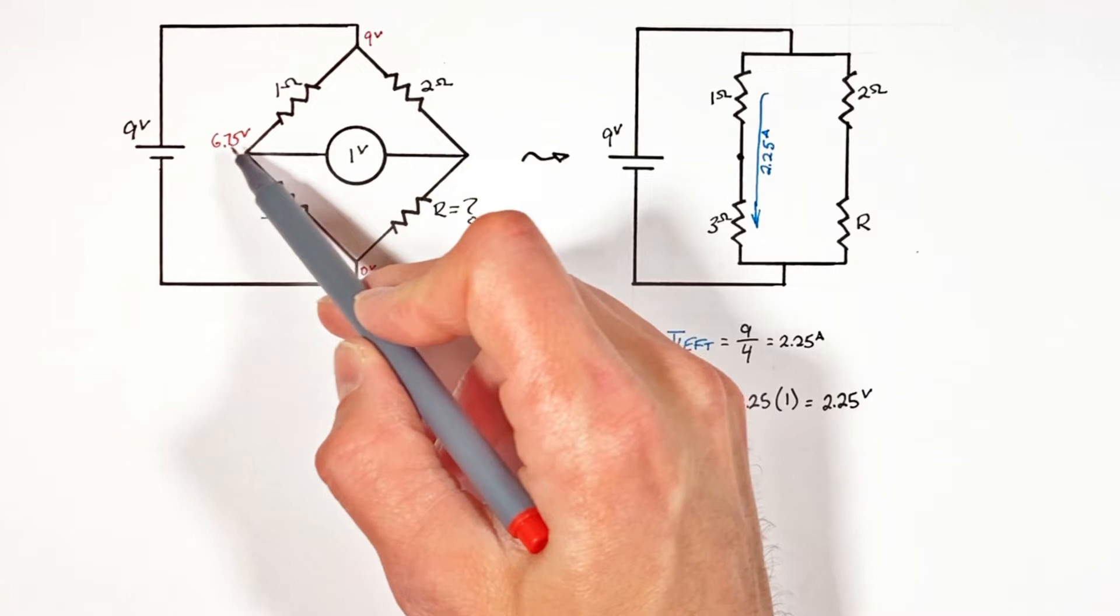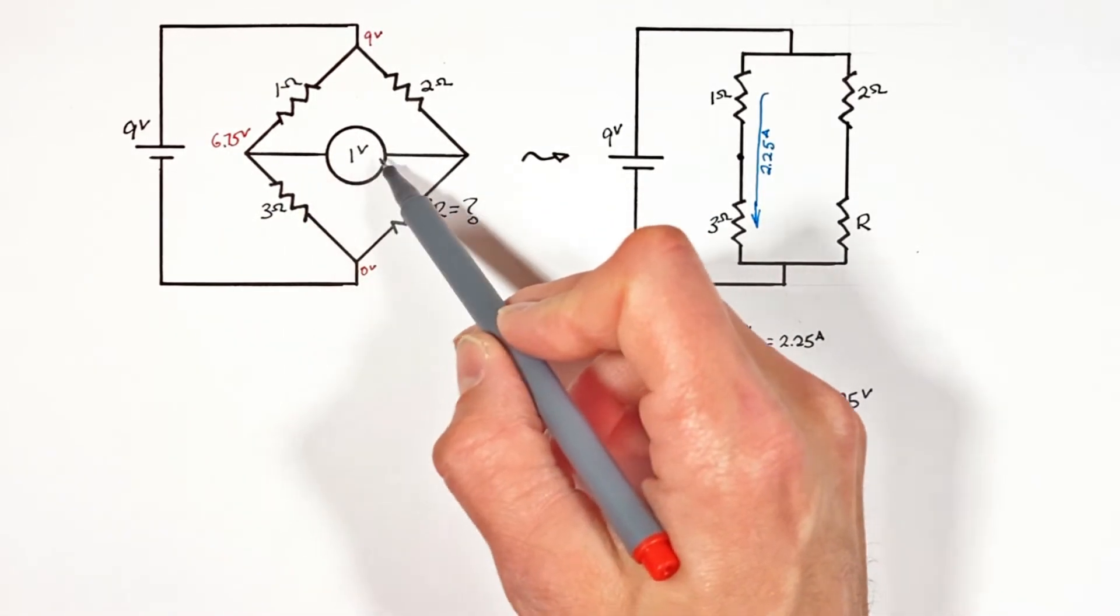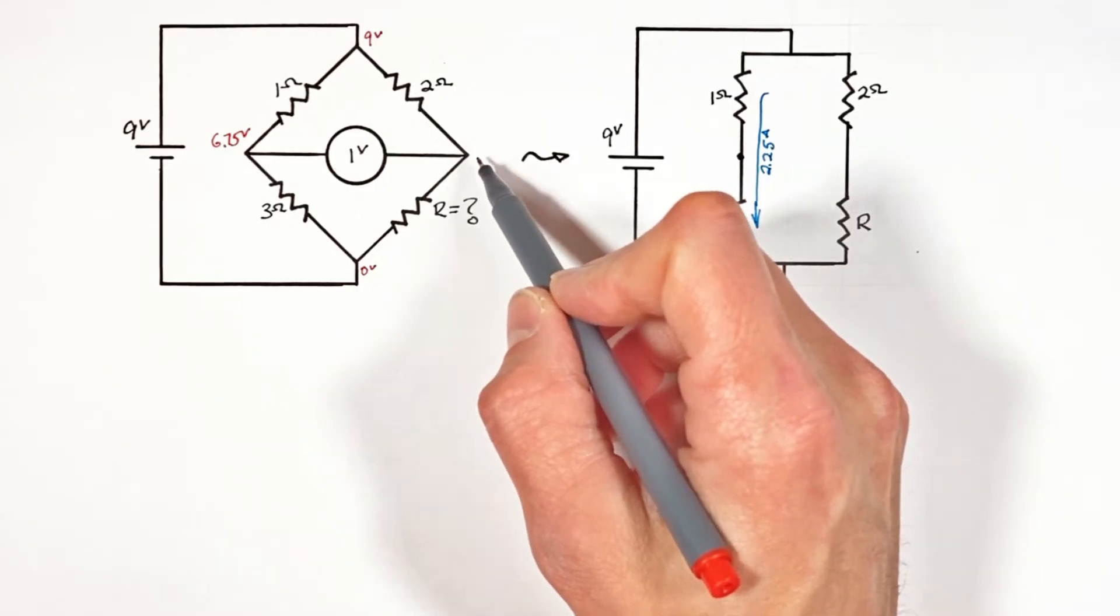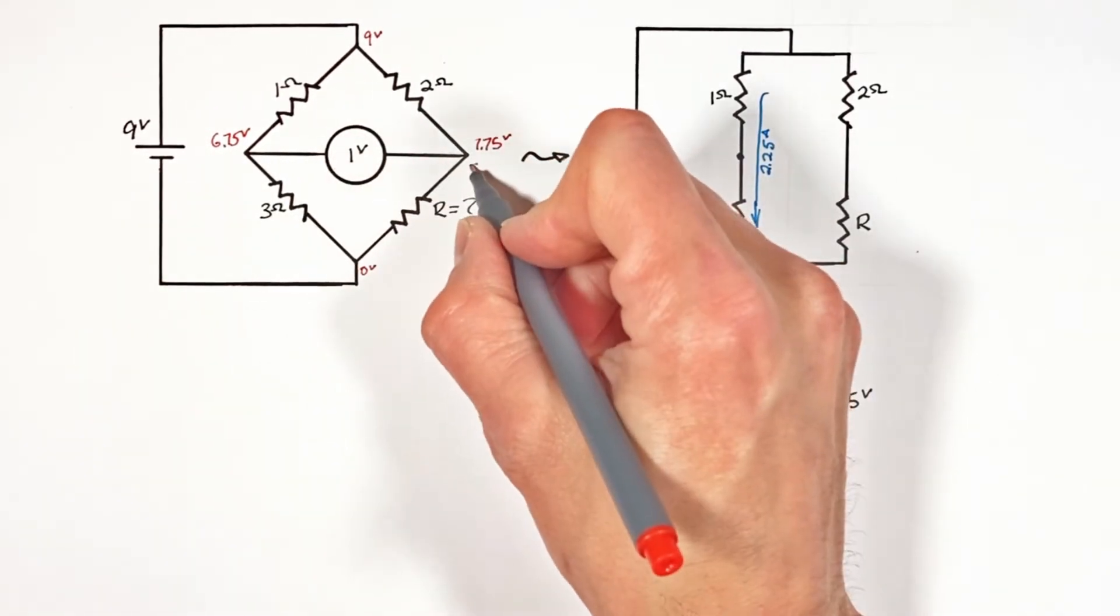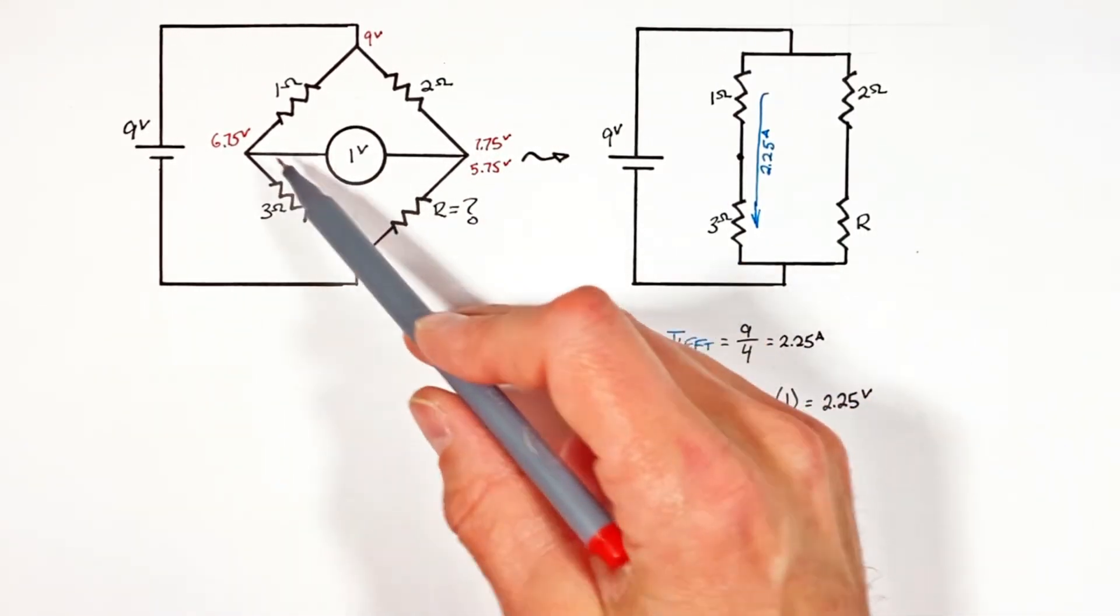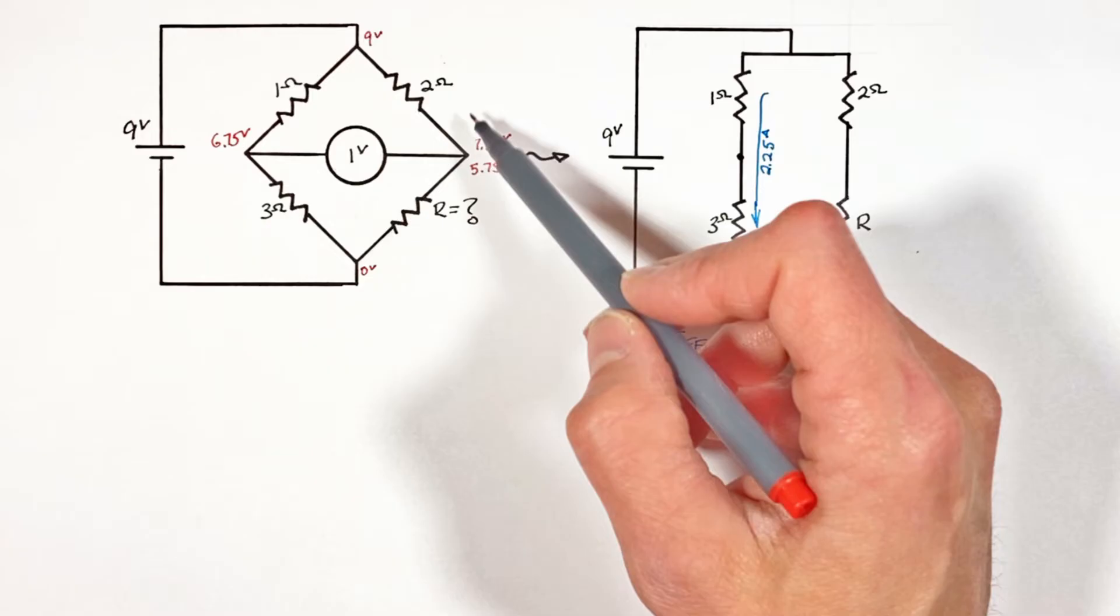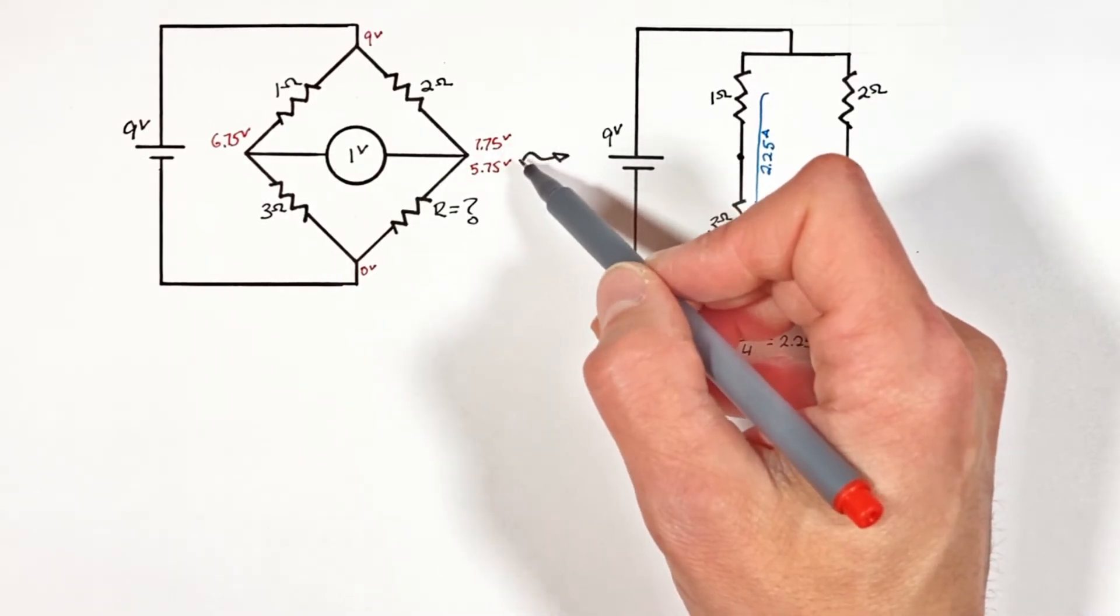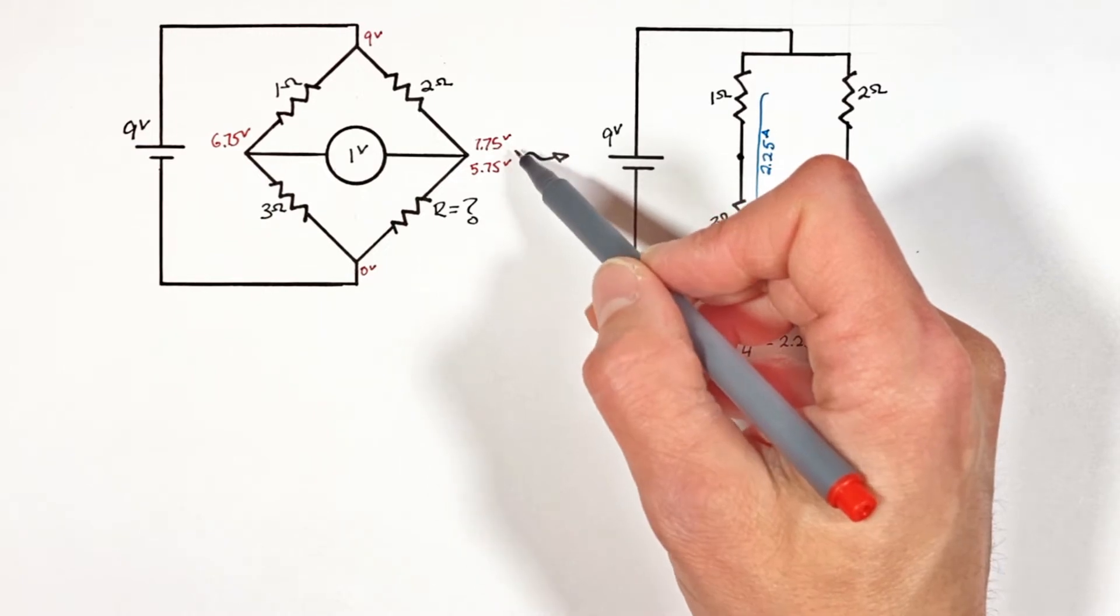So if there's 6.75 volts of potential at this point right here and our voltmeter has a reading of one volt across it that means there's two possible potentials at this point right here, either one volt more than 6.75 or one volt less. Now if you're working a problem like this and it's reasonably worded they might actually tell you there's a one volt drop or a one volt increase in going from the left to the right side of the bridge, but just in case you've got some sort of professor or you're working on a problem that's a little bit tricky well I'm going to work out both of these for you then.